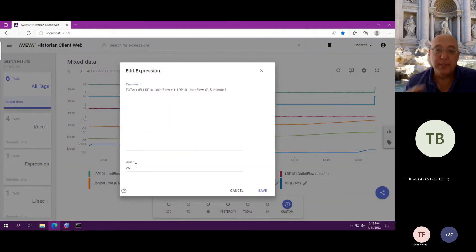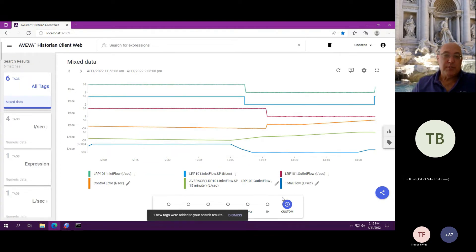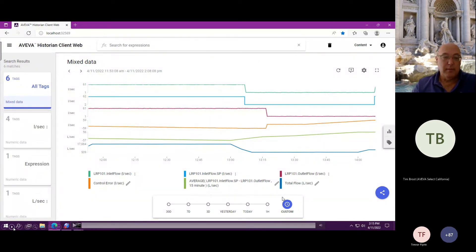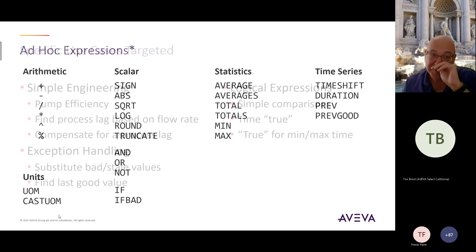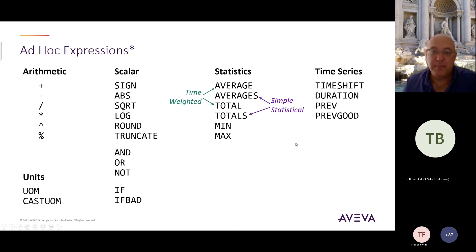You can also do expression types like integrals, which would give you a total. You can do time shift expressions — for instance, if you have data going through a pipe, you can align measurements at the same spot. You can handle calculations for pump efficiency, or understand loading on a pump station if there are multiple pumps. You can do logical substitution of bad data for good data. There are statistical functions: averages and average, totals and total — the ones with an S are simple statistics weighting each record equally, and the ones without S are time-weighted so you get a true time-weighted average or interval.